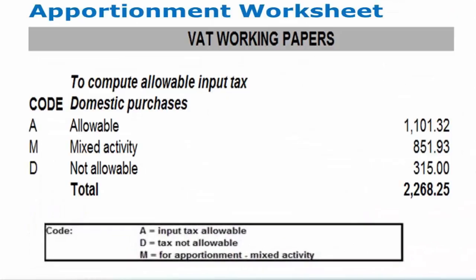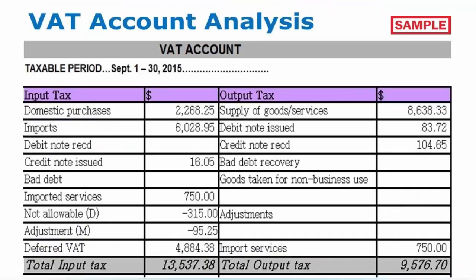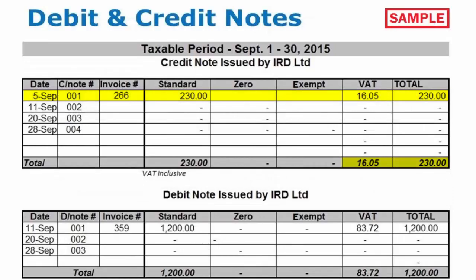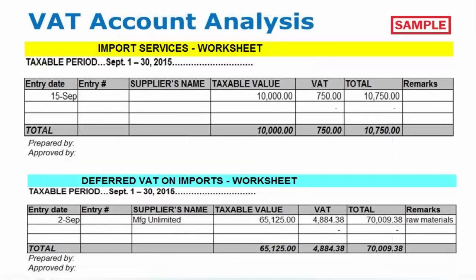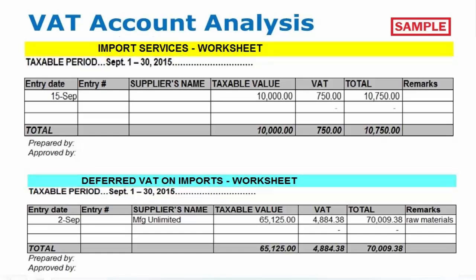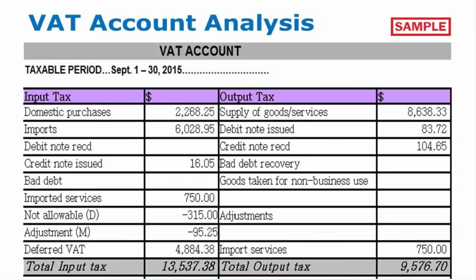Once identified, calculate the figures by code and transfer them to the VAT account under the input tax column. Any adjustments such as debit and credit notes or errors should also be taken into consideration. There are worksheets for additional input tax such as imported services and deferred VAT. The total VAT from each worksheet should then be transferred to the VAT account under the input tax column.